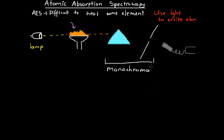A monochromator takes advantage of the fact that different frequencies of light diffract by different amounts as they pass through a prism. The prism separates colors such as red and blue light, and then a movable slit selects only a specific color to measure. For example, with the slit positioned for purple light, we can measure how much purple light is getting through. By moving the slit, we can measure how much of each frequency of light passes through the atomic vapor.